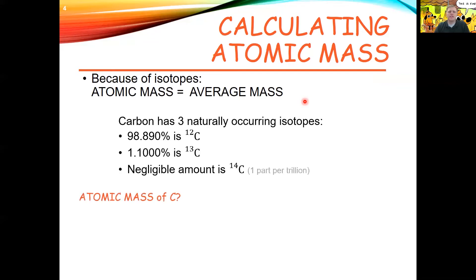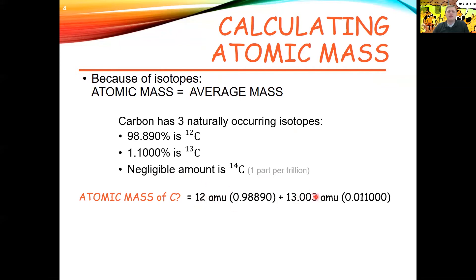Carbon has three naturally occurring isotopes: carbon-12, carbon-13, and carbon-14. Carbon-12 makes up 98.89% of the carbon we see on Earth, and 1.1% is carbon-13, with a really small negligible amount of carbon-14. To calculate the atomic mass of carbon, you take the mass of each isotope and multiply it by the abundance of that isotope. Carbon-12 weighs 12 AMU; carbon-13 weighs 13.003 AMU. The mass of each isotope is a value that must be provided to you — you won't be able to figure that out on your own.